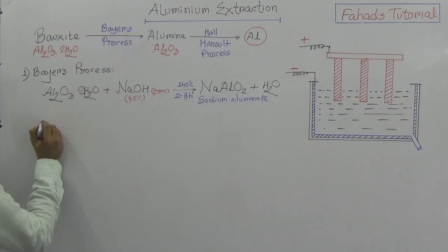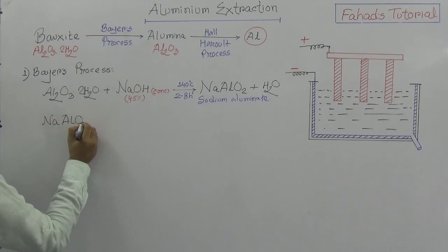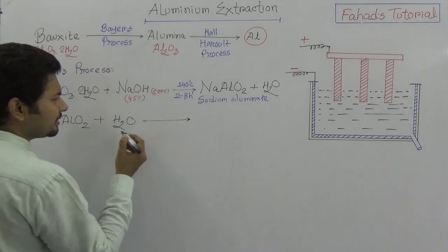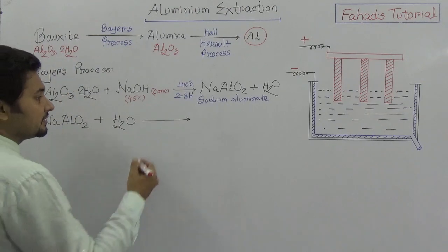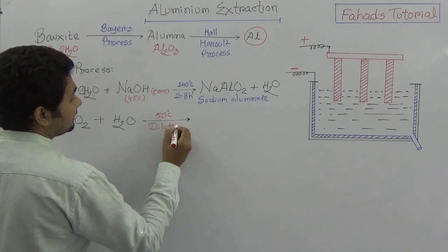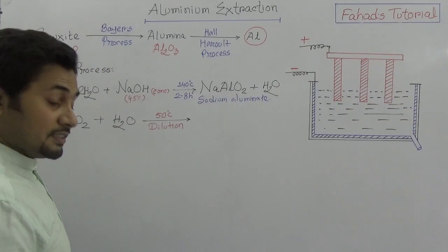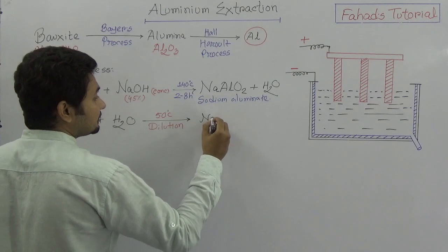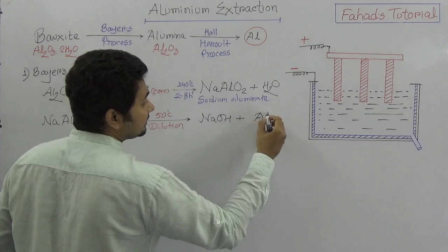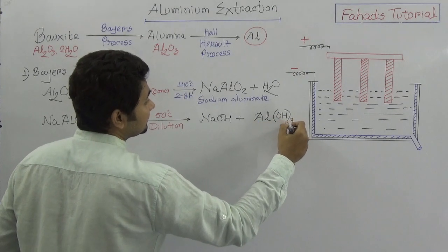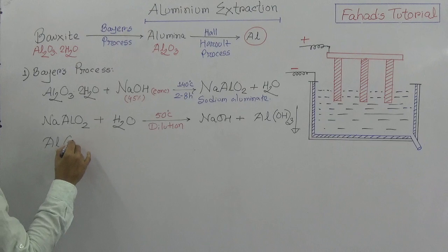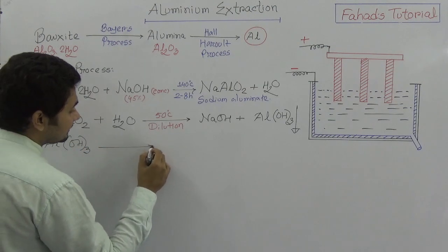In the second step, sodium aluminate undergoes a reaction with water at a lower temperature of 50 degrees Celsius — this is called dilution. What happens here is that sodium hydroxide is regenerated and recycled back, and aluminium hydroxide Al(OH)₃ is precipitated out of solution.